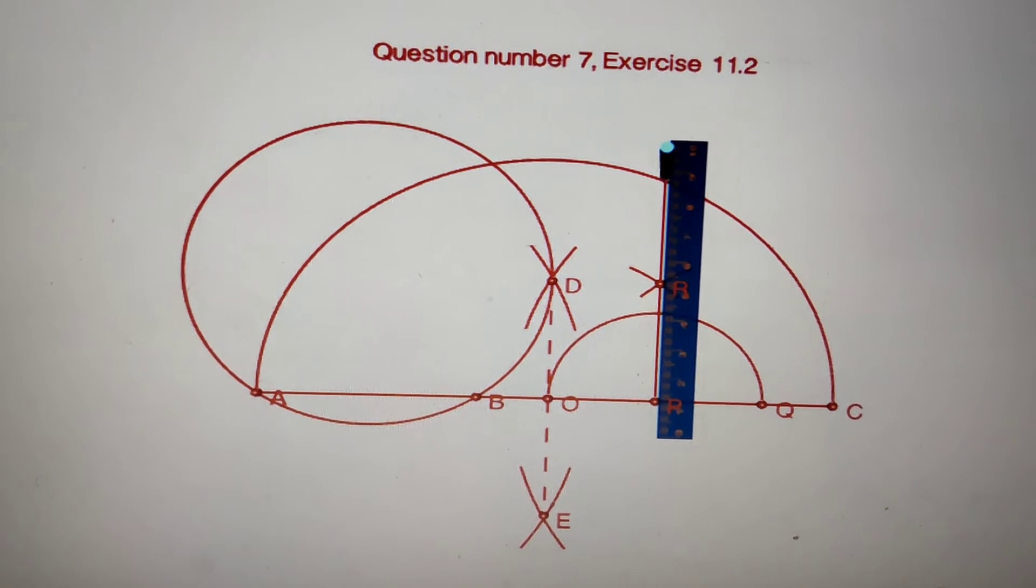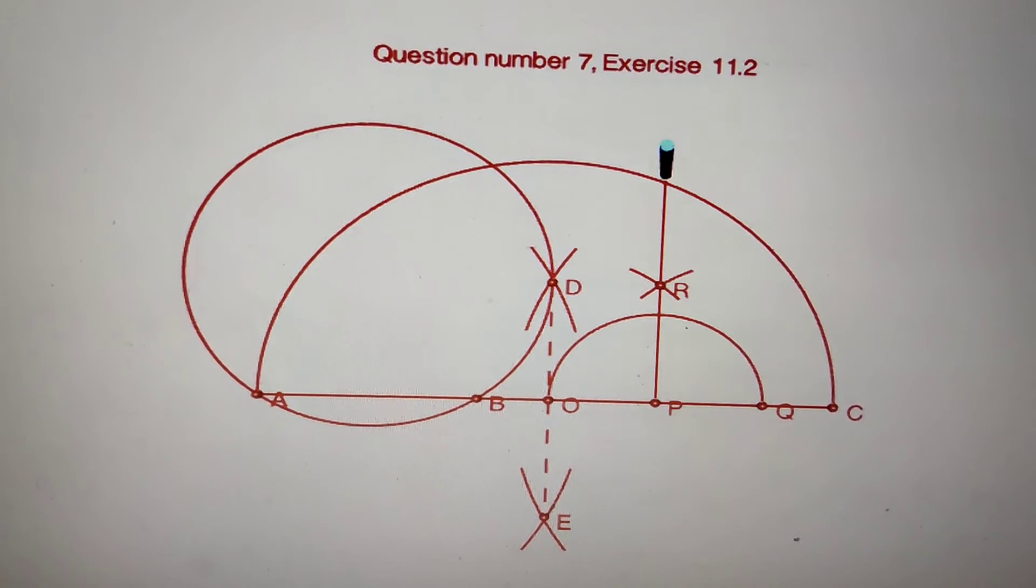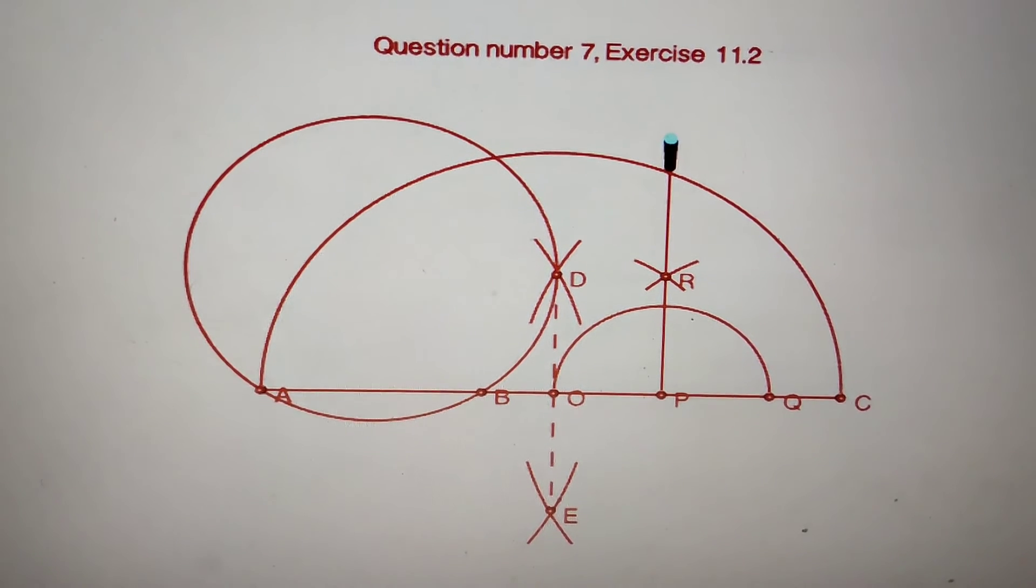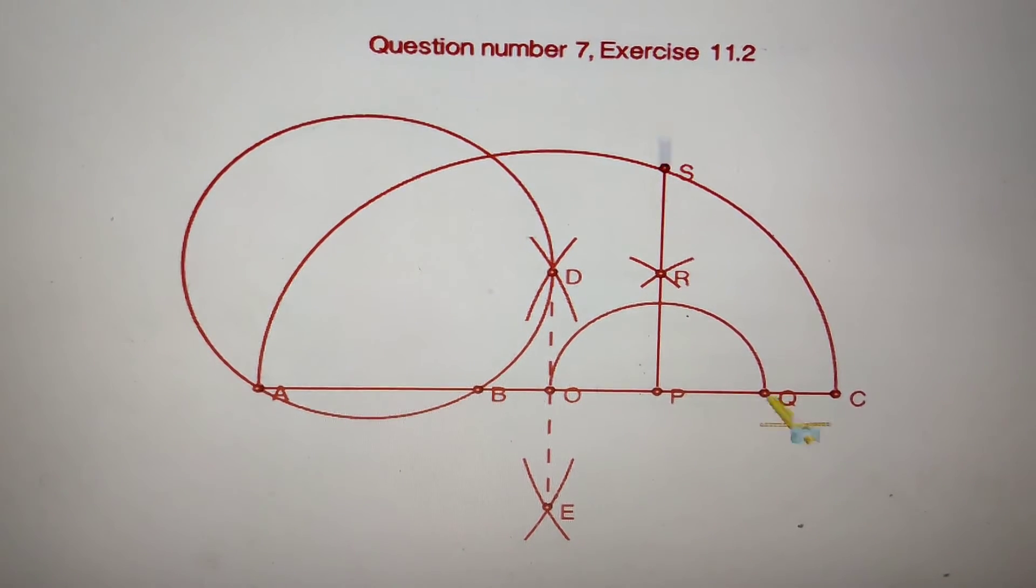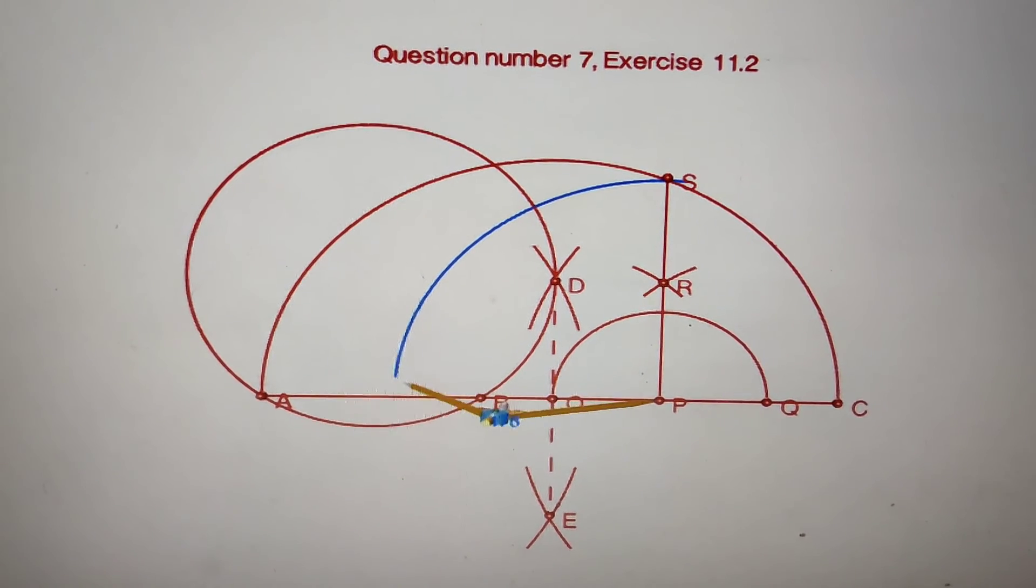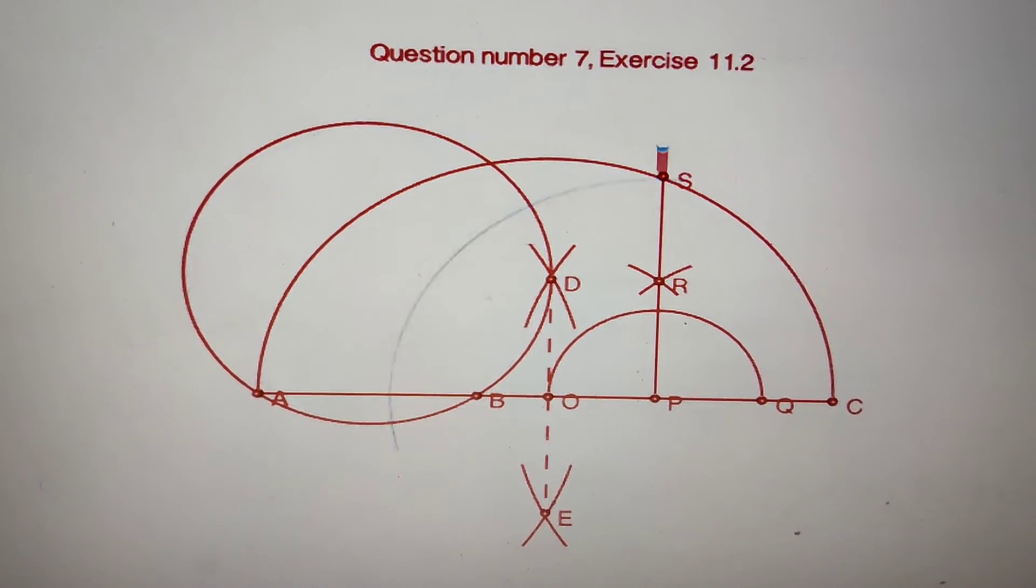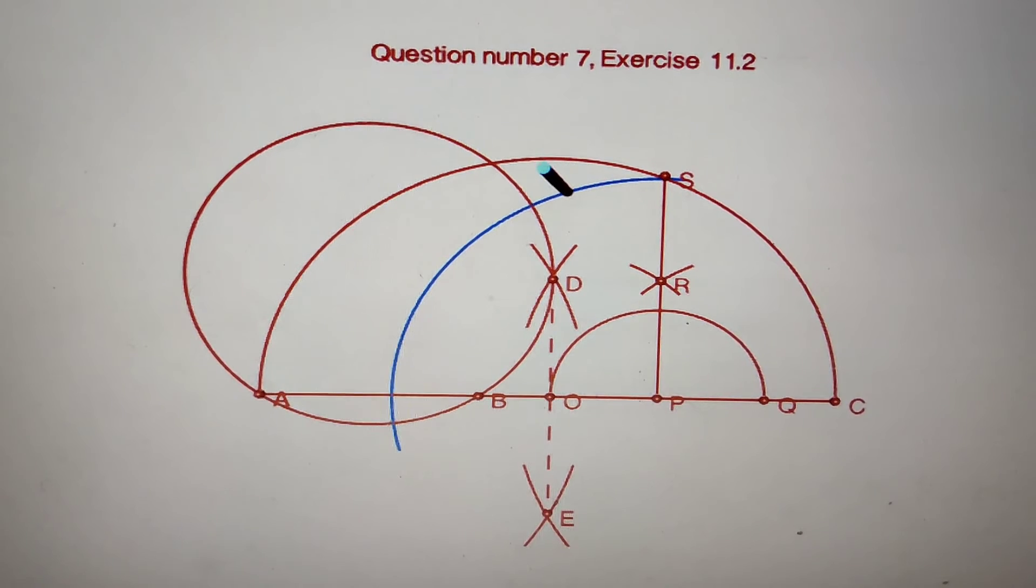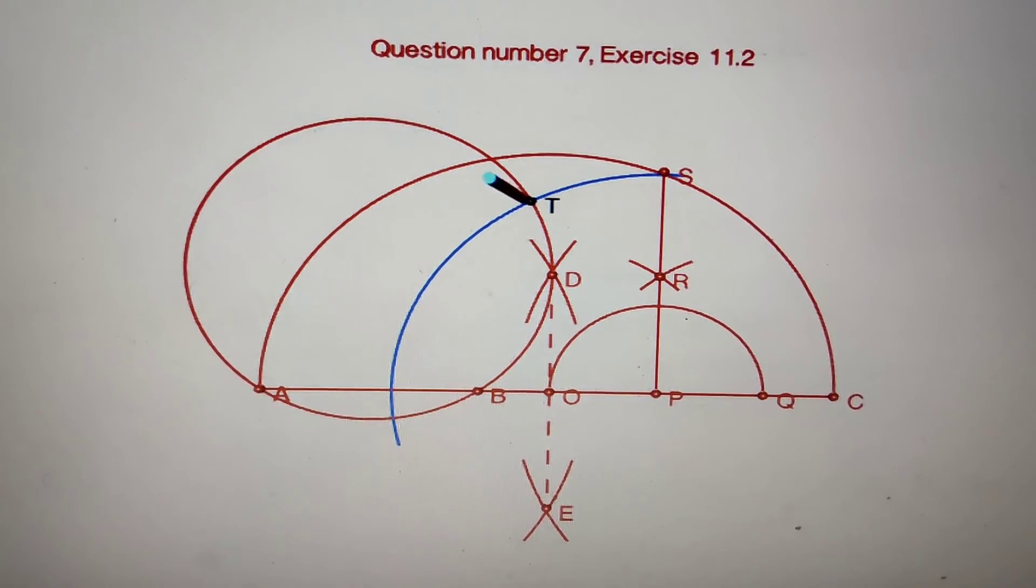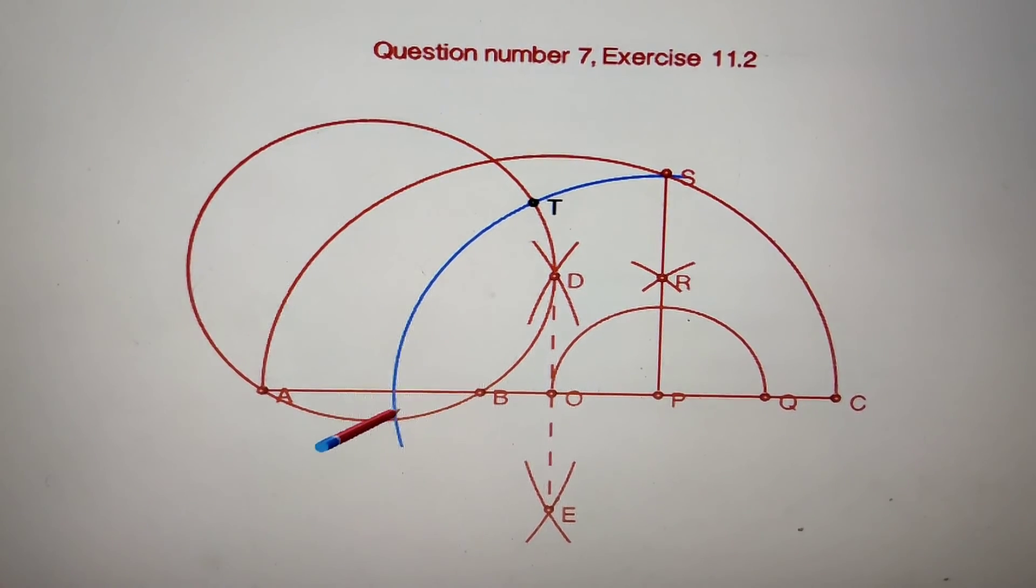This perpendicular meets the semicircle at points R and S. Now take radius PS and draw a circle, or only arcs, which cut the initial circle at two points. The initial circle is cut at the two points T and U.